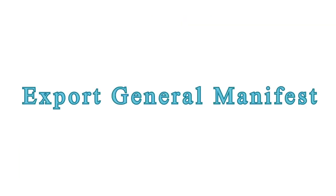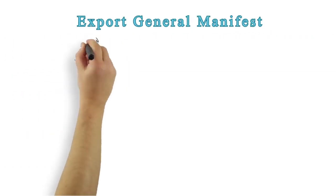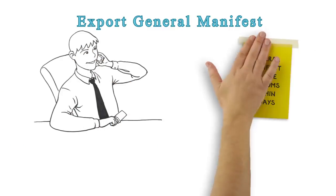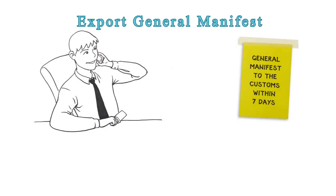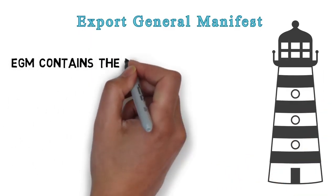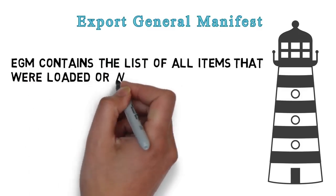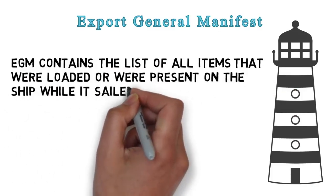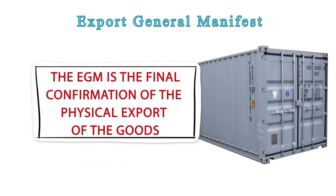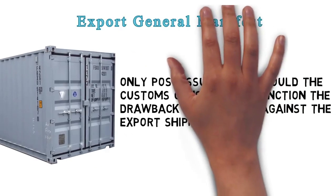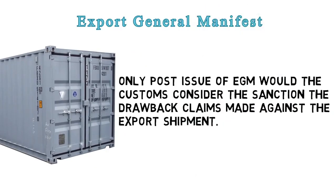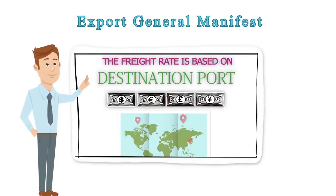Export General Manifest (EGM). Once the ship sails away, shipping lines or their agents furnish the Export General Manifest to the customs within seven days from the date of sailing of the vessel. The EGM contains the list of all items that were loaded or were present on the ship while it sailed from the port. The EGM is the final confirmation of the physical export of the goods. Only post-issue of EGM would the customs consider the sanction of the drawback claims made against the export shipment. We will discuss drawback claims in further videos.